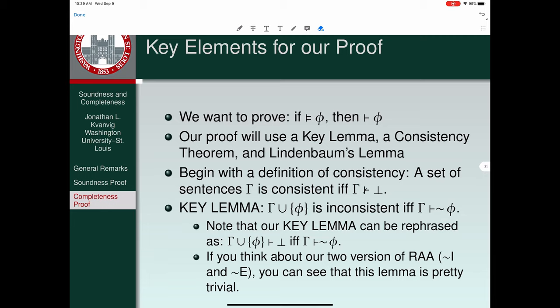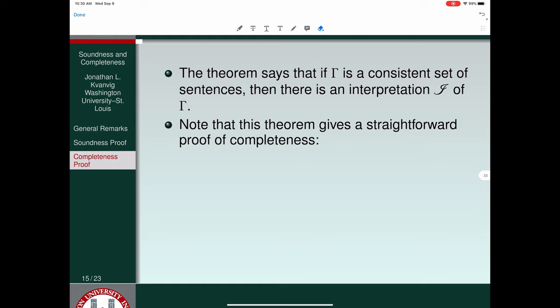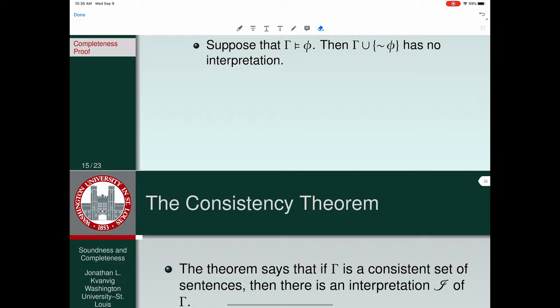The key elements in the proof of completeness are: the key lemma, a consistency theorem, and Lindenbaum's lemma. The consistency theorem says that if gamma is a consistent set of sentences, then it has an interpretation — there is some model for gamma. If we have this consistency theorem, we can give a very straightforward, simple proof of completeness.